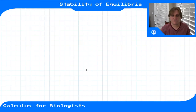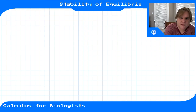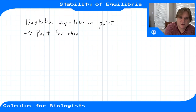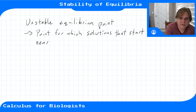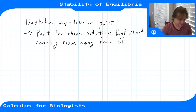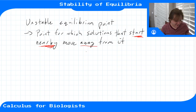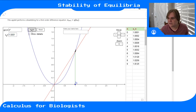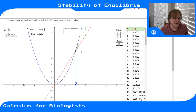For a discrete time system, an unstable equilibrium point is one for which solutions that start nearby move away from it. If we start really close, like at 1.001, that's starting near that point, and eventually you step away from it in forward time — you move away from that equilibrium point.